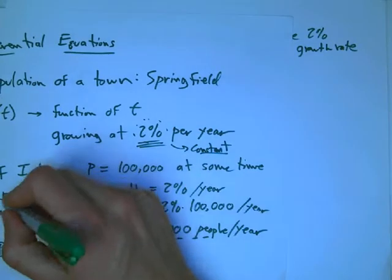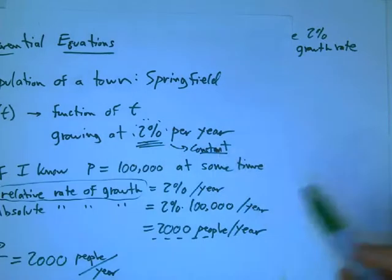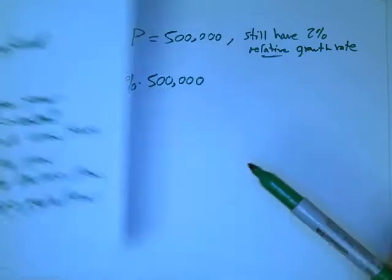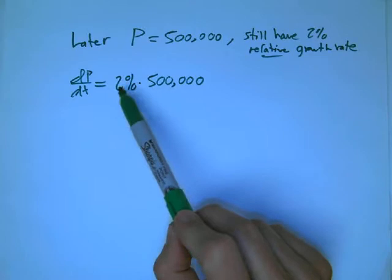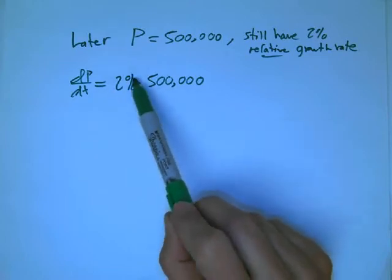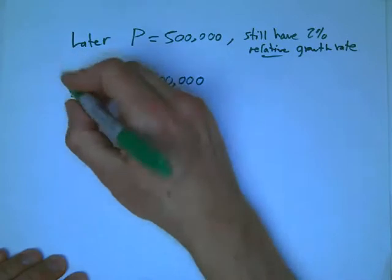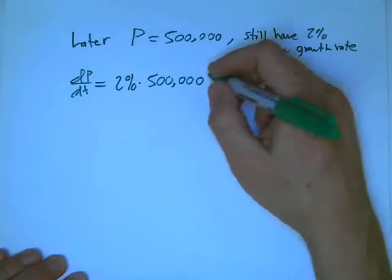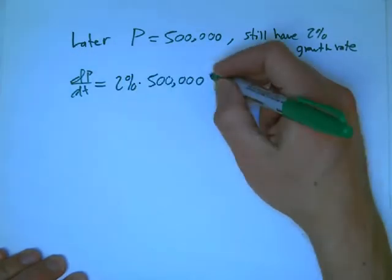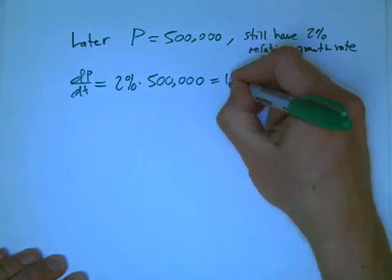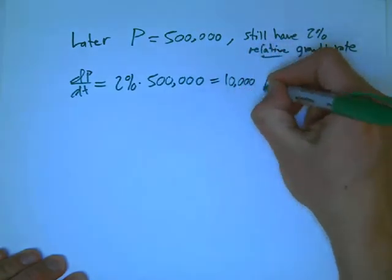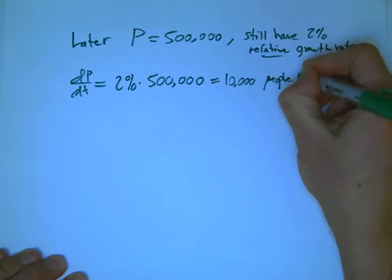So it's a constant relative rate of growth. The relative rate of growth is assumed to be a fixed number in this example. That if you take 2% of 500,000 people, that should be how fast the population is increasing in terms of an absolute number of people. Well, that's going to be 10,000 people per year.